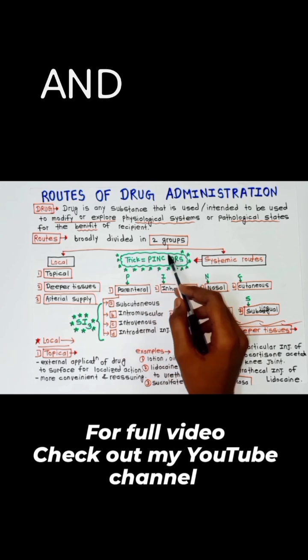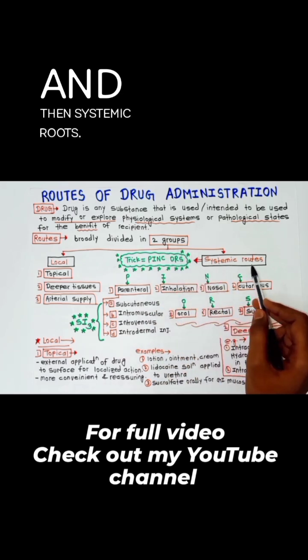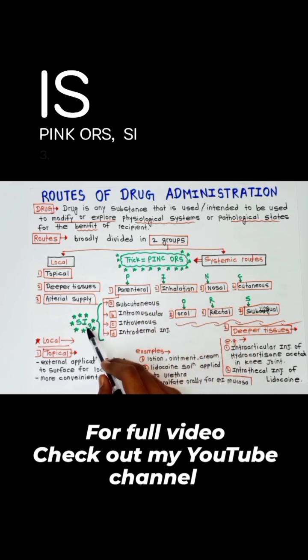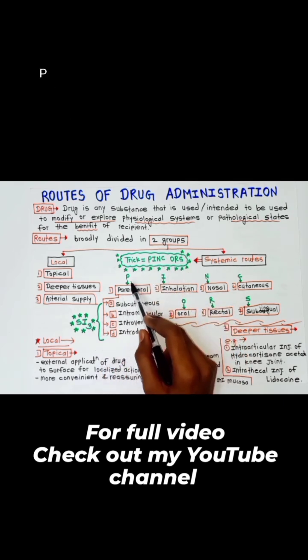And then systemic routes. The trick to remember systemic routes is PINK ORS SI3.